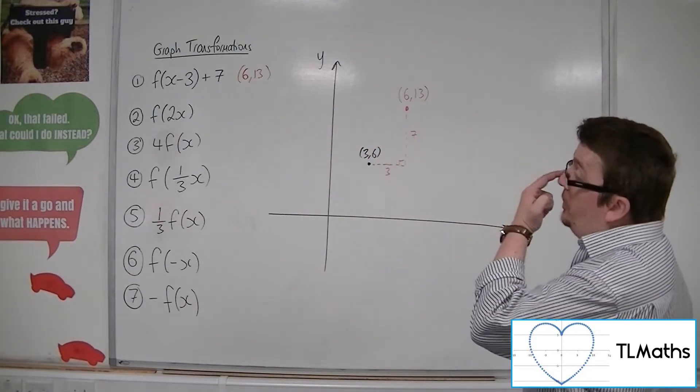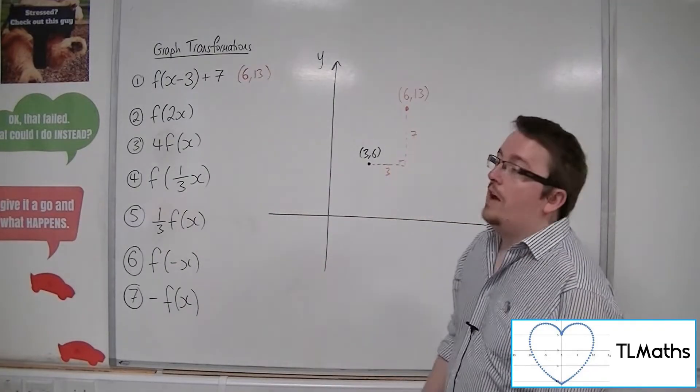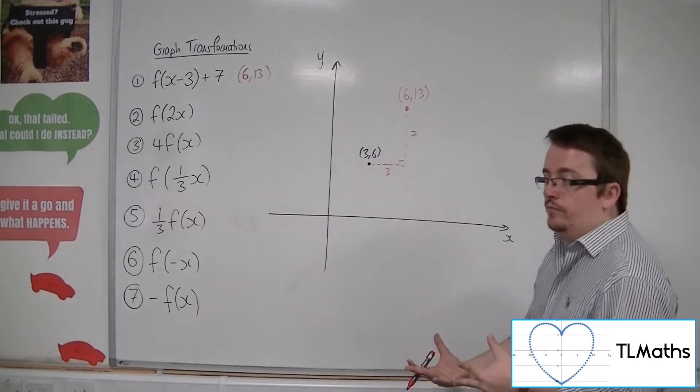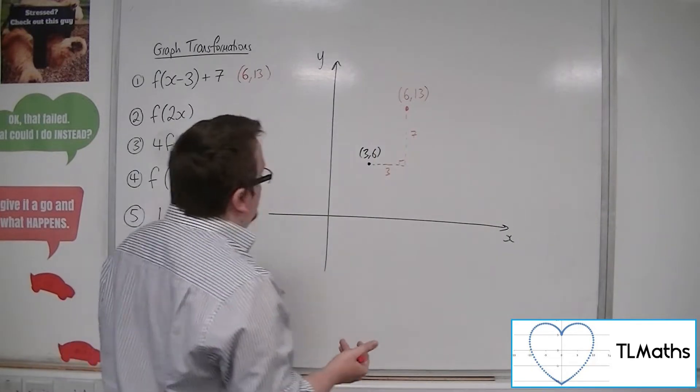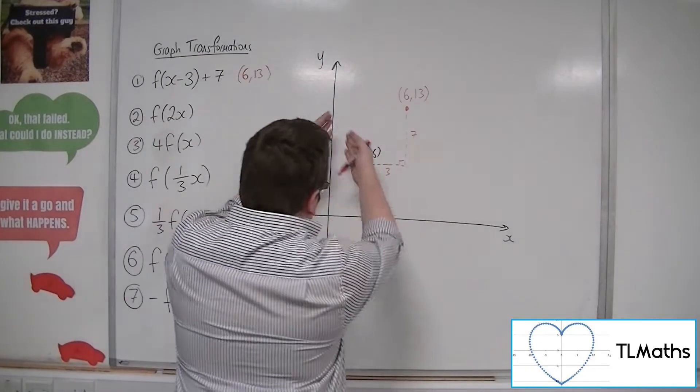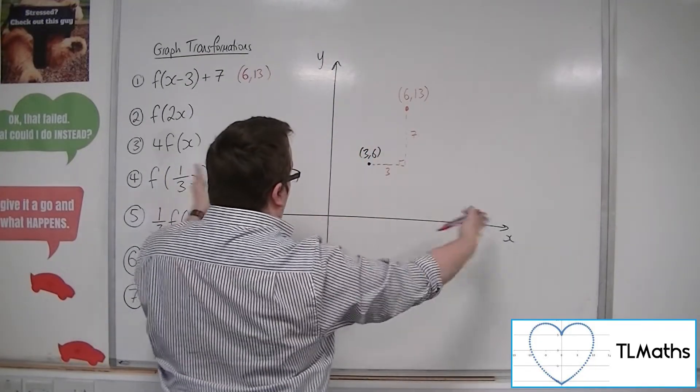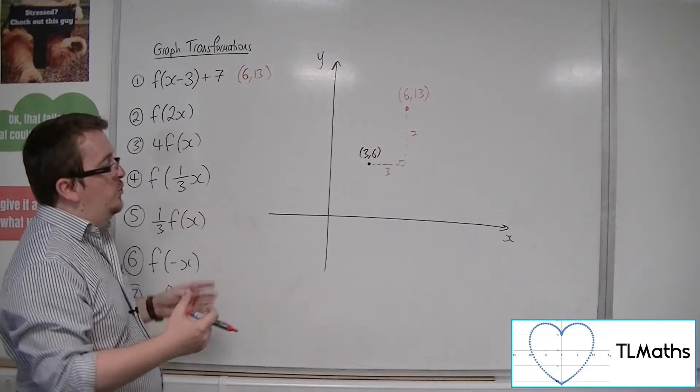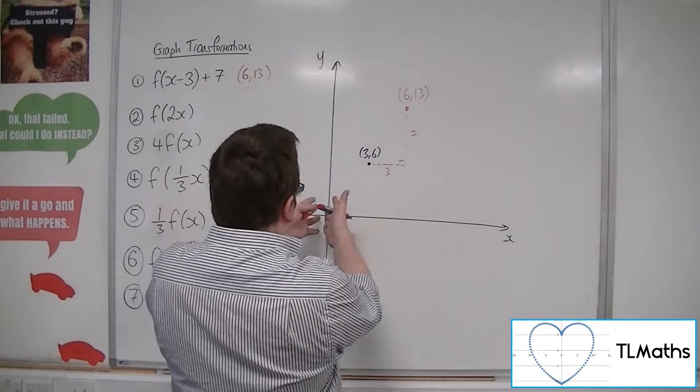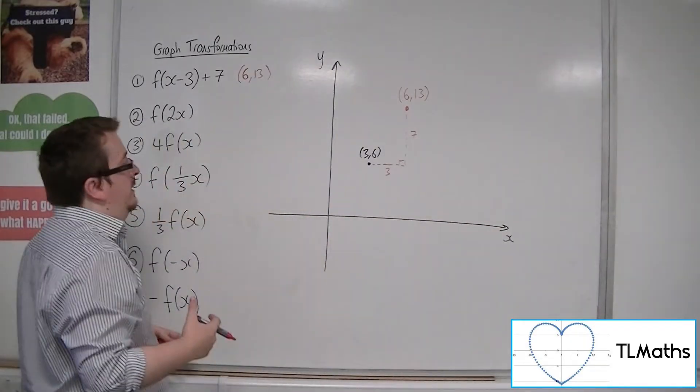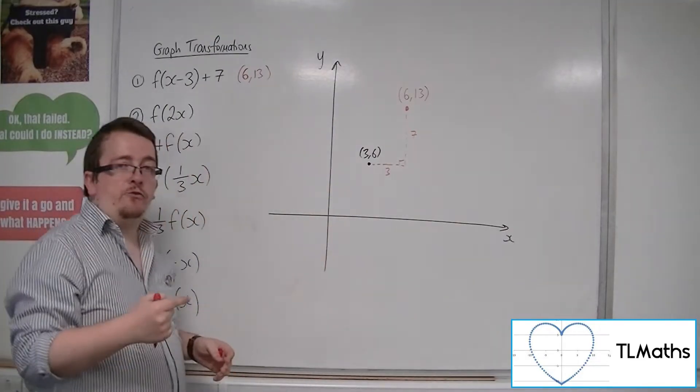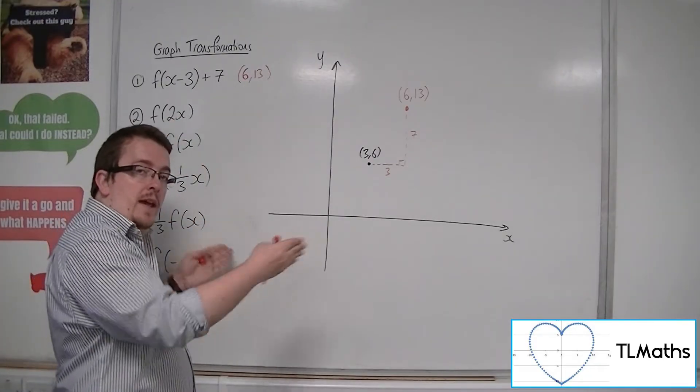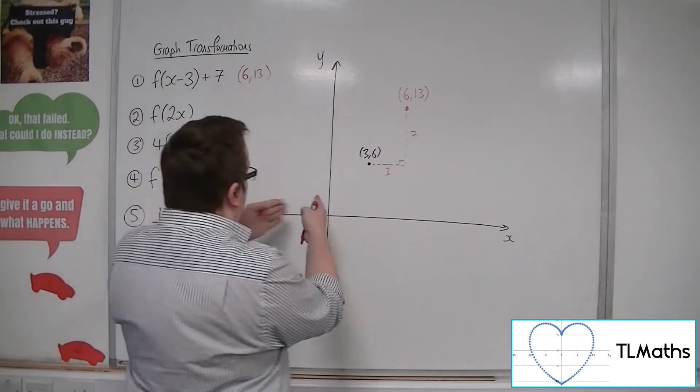Now for number 2, we've got f(2x). Now that is a stretch by factor of 1/2 in the x direction. So whenever a stretch is applied in the x direction, it always comes out from the y-axis. So anything that is going to be stretched will move according to where they are on the y-axis. So if you had a point that was on the y-axis, for example, then if you applied a stretch in the x direction, it wouldn't move. It would stay fixed.